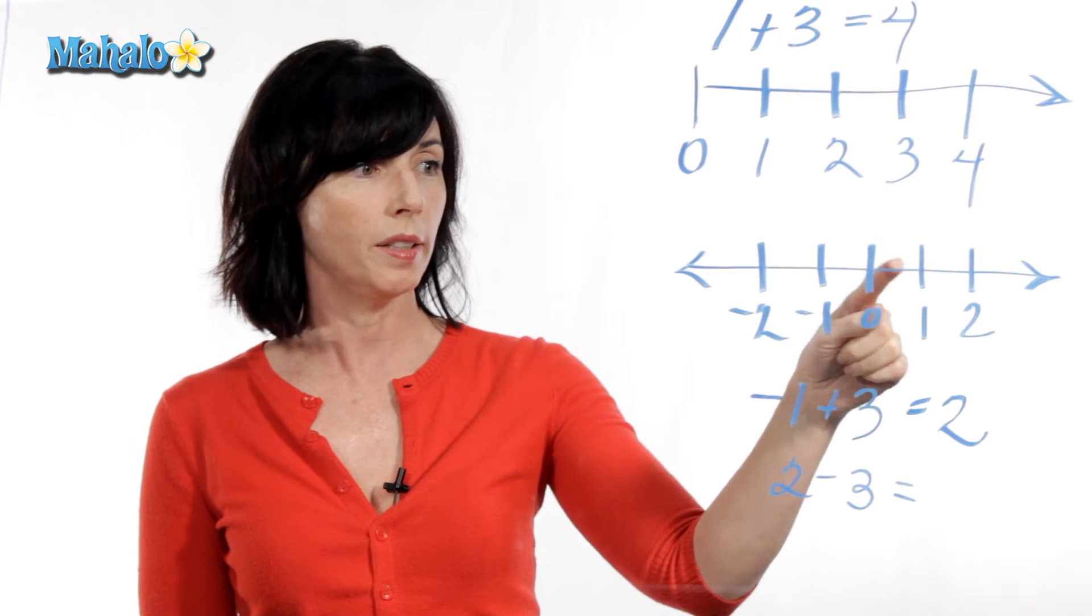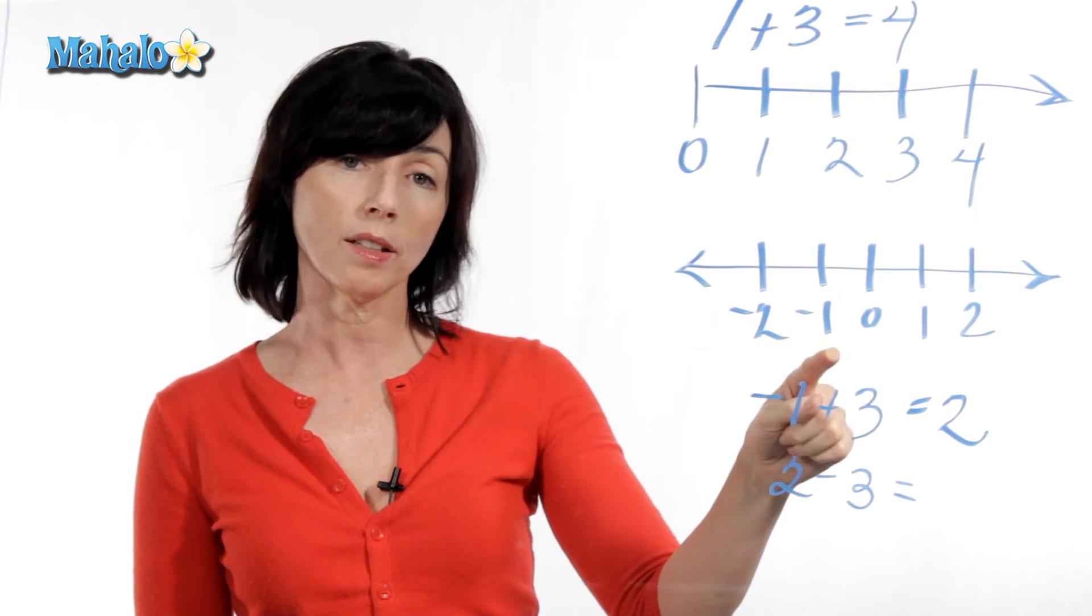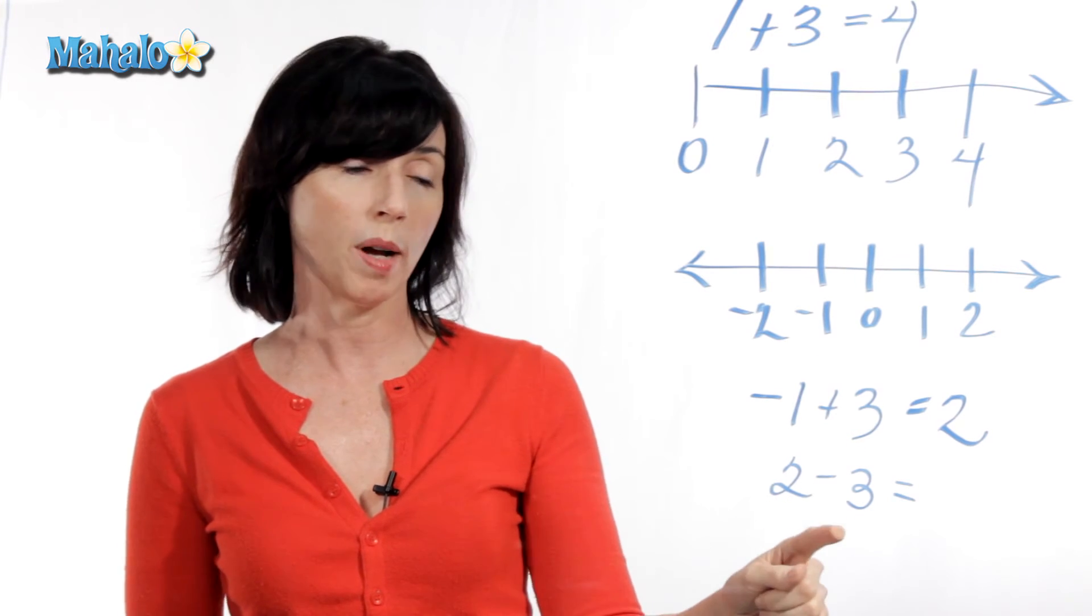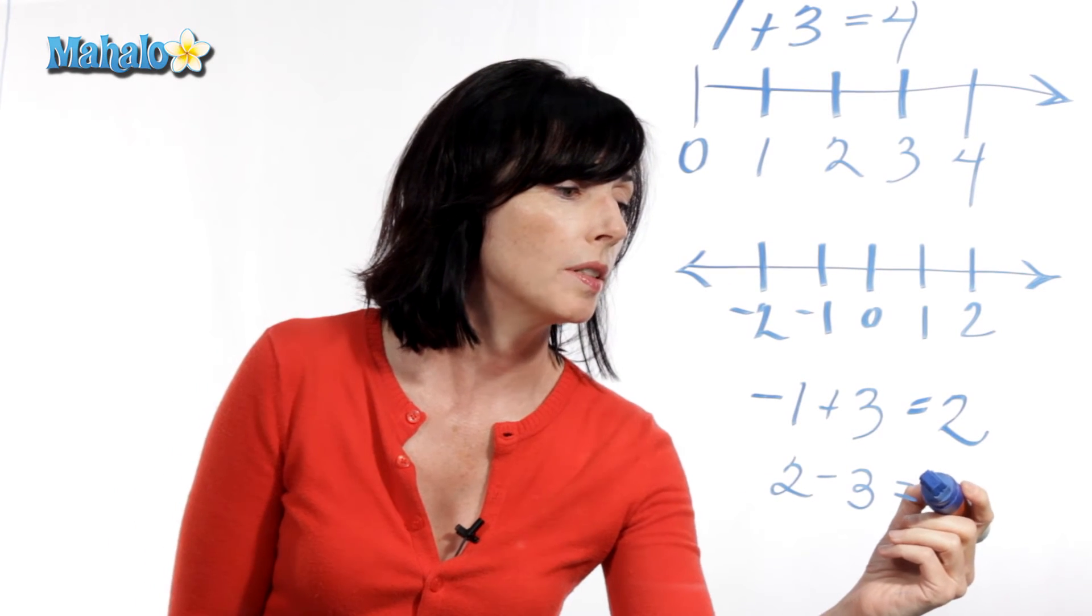So we go one, two, three. And we land on minus one. So two minus three is equal to minus one.